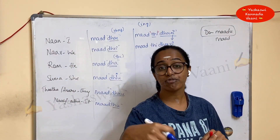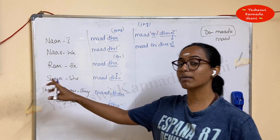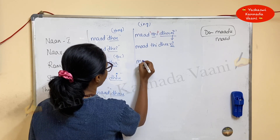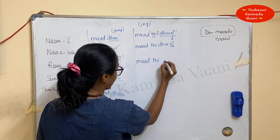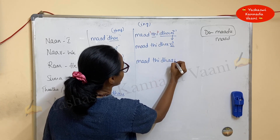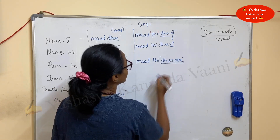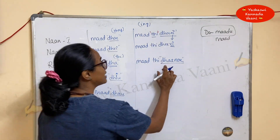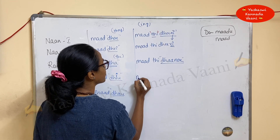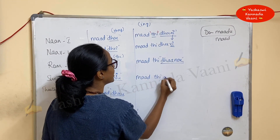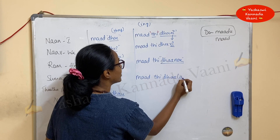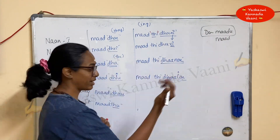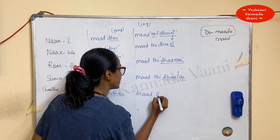Now let's go to the male and female article examples. The name is Ram — 'Ram is working' or 'Ram is doing': Ram maad ti daane. 'Ti' remains the same everywhere, and 'daane' is the masculine form. If it's a female, it becomes 'maad ti daale' — 'la' has to touch the upper part of the mouth.